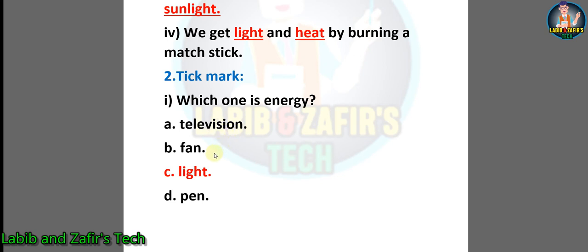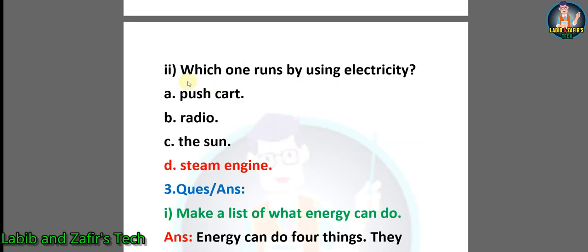The correct answer is C) light. Number two: which one runs by using electricity? A) push cart, B) radio, C) the sun, D) steam engine. The correct answer is B) radio.